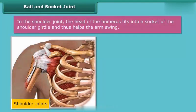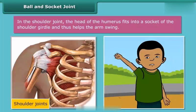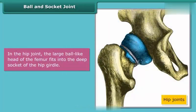In the shoulder joint, the head of the humerus fits into a socket of the shoulder girdle, and thus helps the arm swing. In the hip joint, the large ball-like head of the femur fits into the deep socket of the hip girdle.